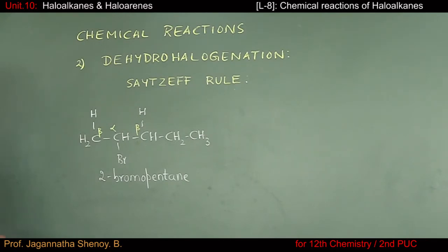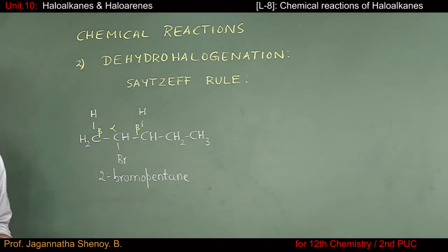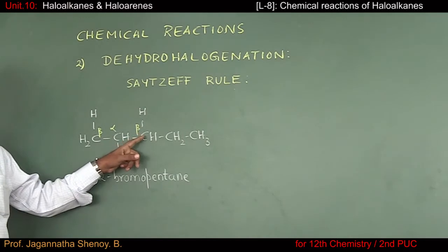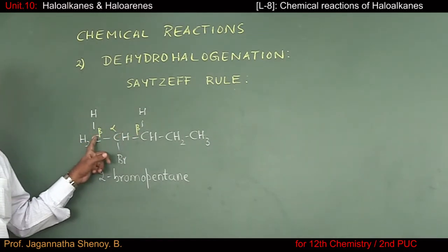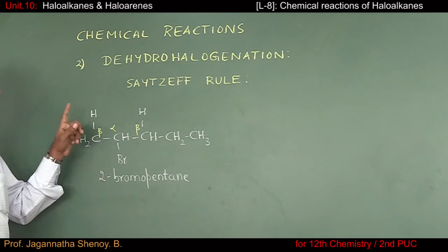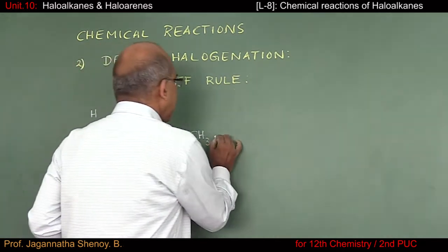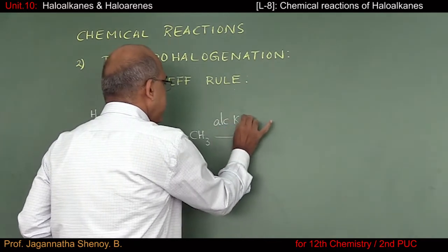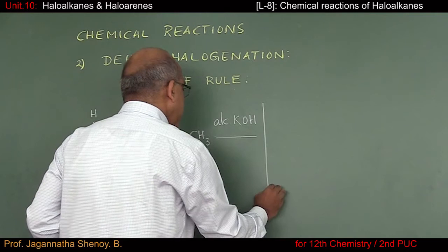Let us consider dehydrohalogenation on 2-bromopentane. In this molecule you can observe that there are two different types of beta hydrogens. When you carry out dehydrohalogenation using alcoholic KOH, you get two different products, depending on which beta carbon atom the hydrogen is removed from.